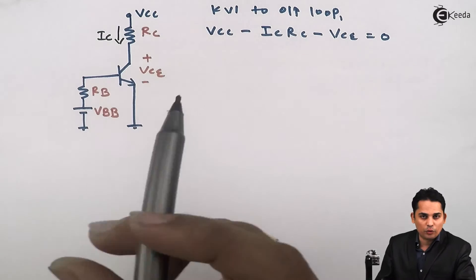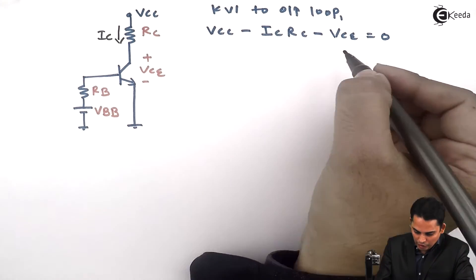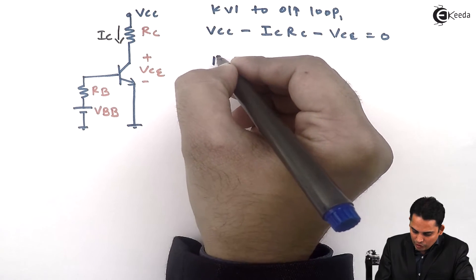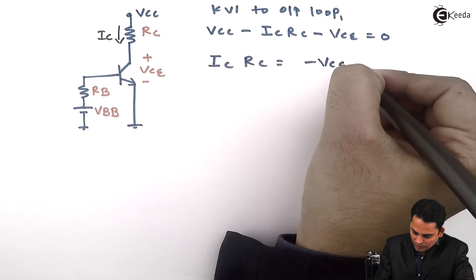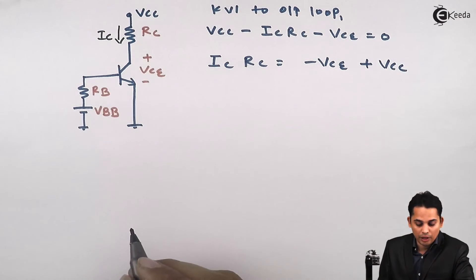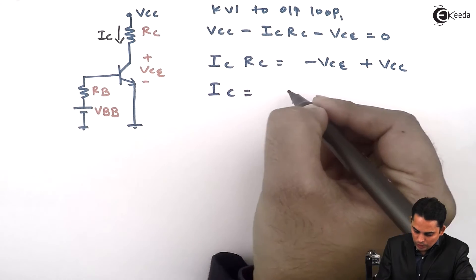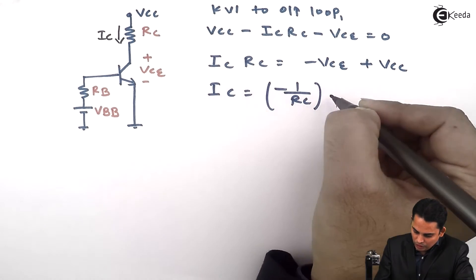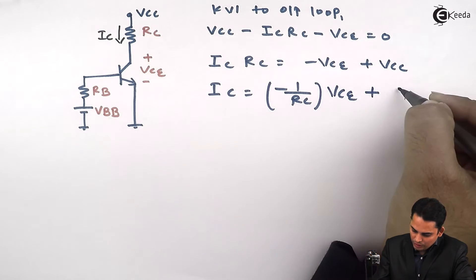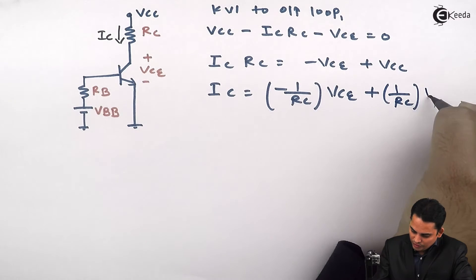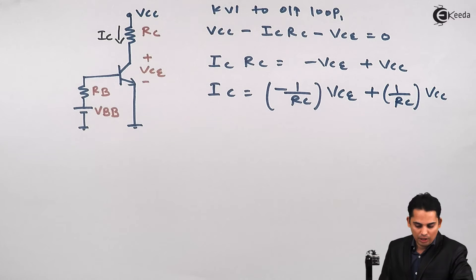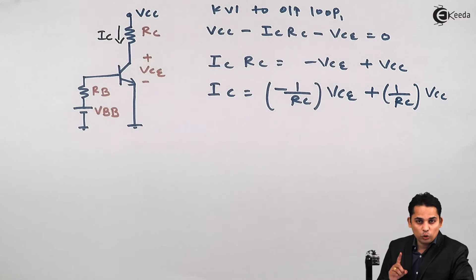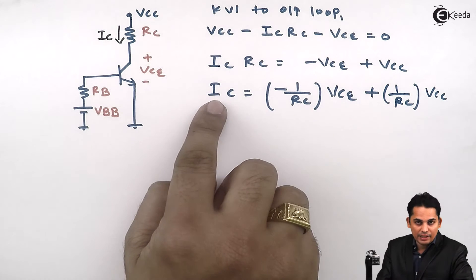We will keep the current on one side with remaining parameters on the right-hand side. Rearranging, the equation becomes IC equals minus 1 over RC times VCE plus VCC over RC. We know that the Q point of a circuit is defined by IC and VCE. In order to draw a line, we need a minimum of two points, so we need to find two points: one for IC and one for VCE.